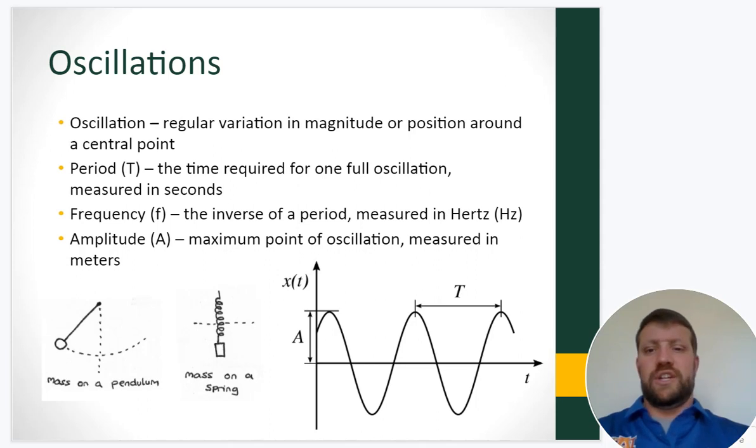So let's talk about what oscillations are. We've got to define a couple of terms here before we can continue on with the rest of this. An oscillation is the regular variation in magnitude or position around a central point. So the pendulum swings, comes back, one full oscillation. An object hanging from a spring goes down, comes up, goes back to the starting point, one full oscillation. It is one full cycle of this repeating process.